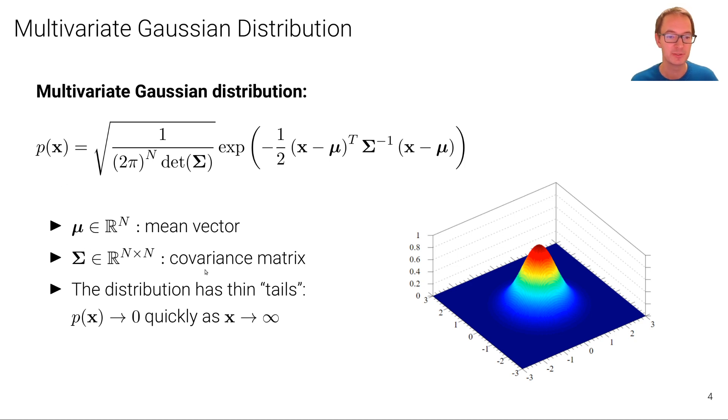Or the random variable that we want to describe. And the second parameter is the covariance matrix sigma, which is an n by n matrix. And again, the distribution has thin tails as x goes to infinity in any direction, p of x goes to 0 very quickly. Here on the right we see an example for the two-dimensional case, the bivariate Gaussian distribution centered at 0.